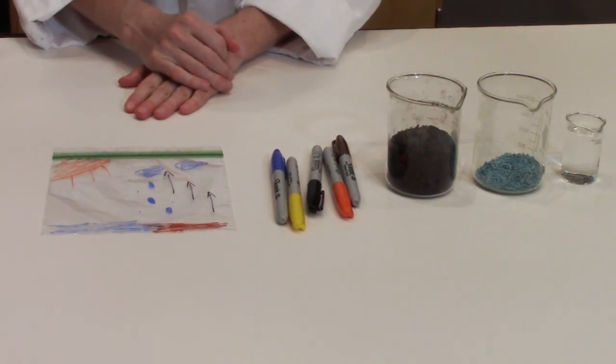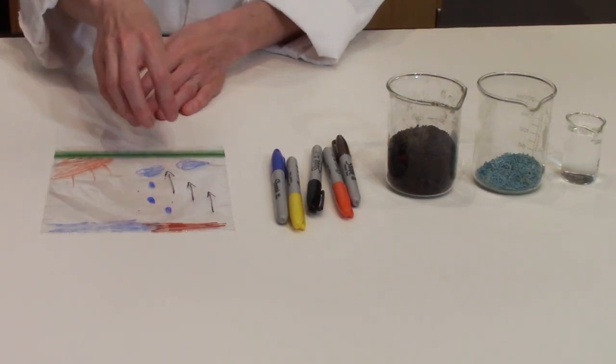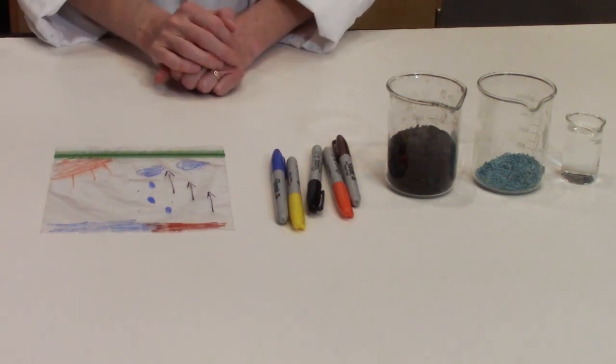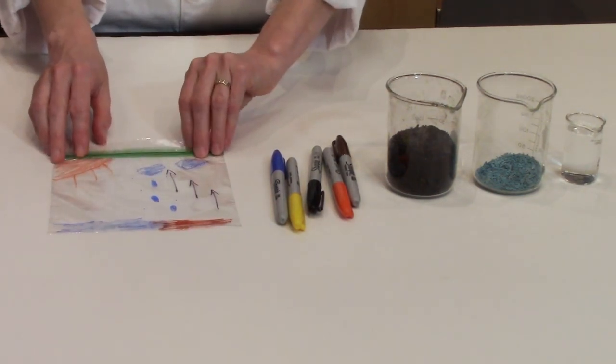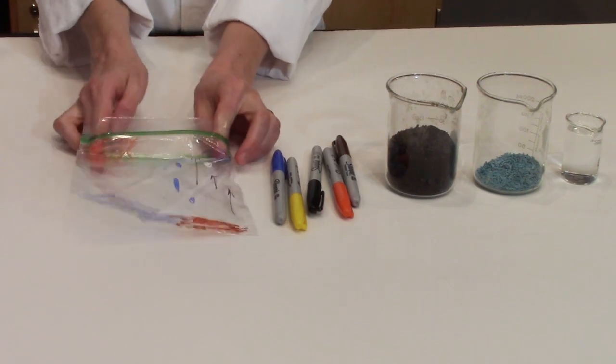But this is our water cycle. Sun heating up the water, the water evaporates, condenses, and it precipitates again. So our first step is done. The next part, which is the fun part,